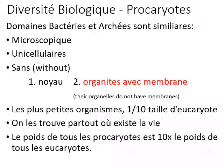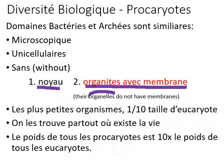We are going to explore the domains in more detail and the types of organisms found in each domain. We'll start with the domain of organisms that have prokaryotic cells — bacteria and archaea. They have things in common: they are microscopic, unicellular, and do not have a nucleus. They do not have organelles with membranes. Bacteria and archaea are the smallest organisms, about one-tenth the size of a eukaryote.